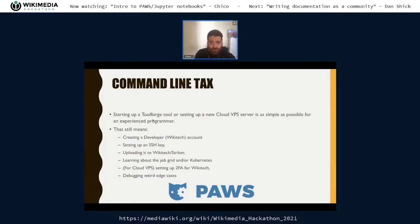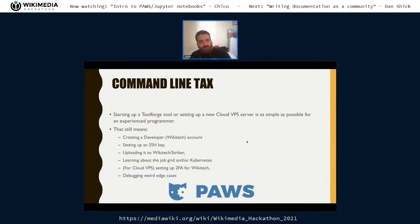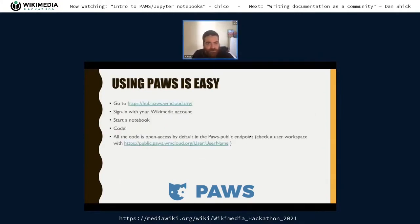Starting up ToolForge, which is the easiest of those alternatives, still requires setting up a developer account for Wikitech, an SSH key uploaded to Striker, and learning the job grid and Kubernetes. For CloudVPS, you need second-factor authentication and there are still some edge cases. For Paws, you just go to the web page, sign in with your Wikimedia account, and that's it. You can start a notebook and code immediately.